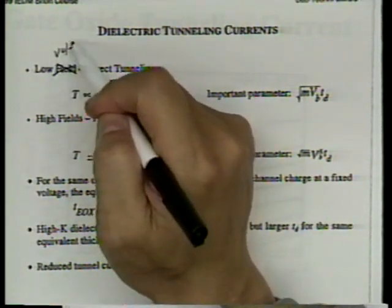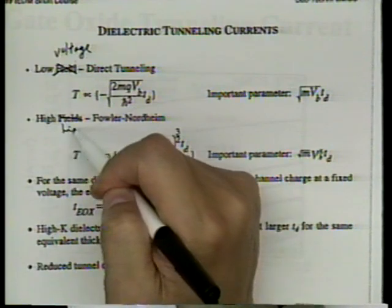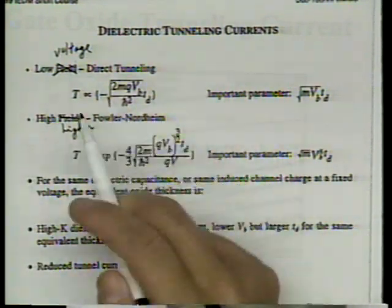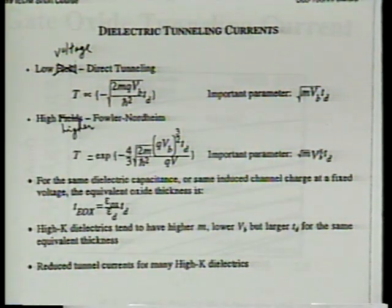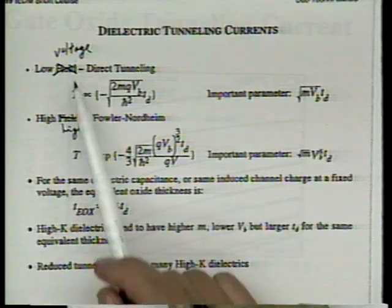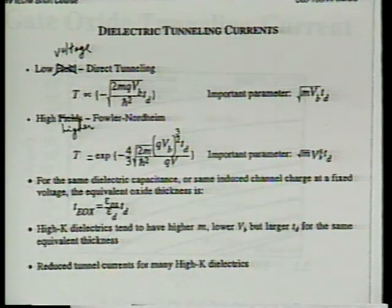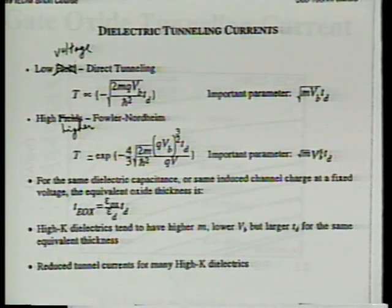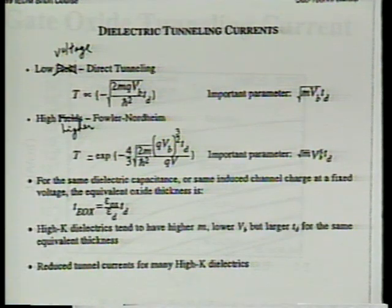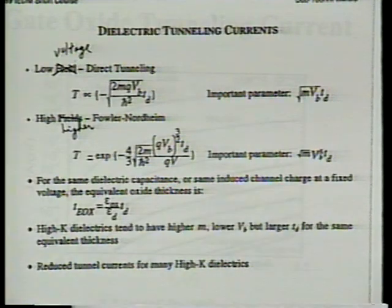Interestingly, for SiO2 the worst case is NMOS — it sees more leakage than PMOS — but for nitride it appears PMOS shows more leakage than NMOS. That's new information worth watching carefully as more nitride data emerges.